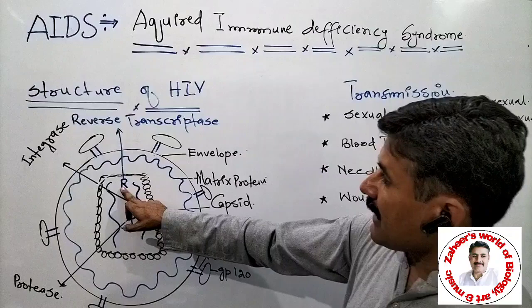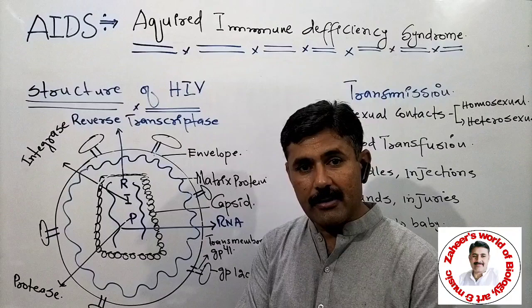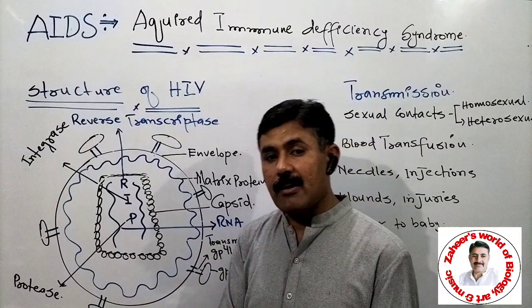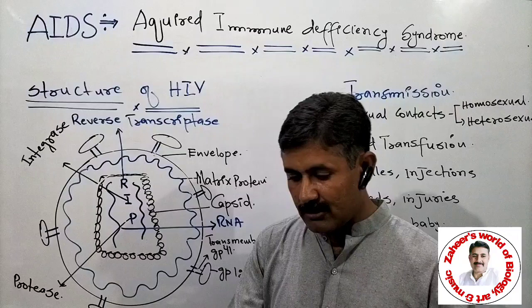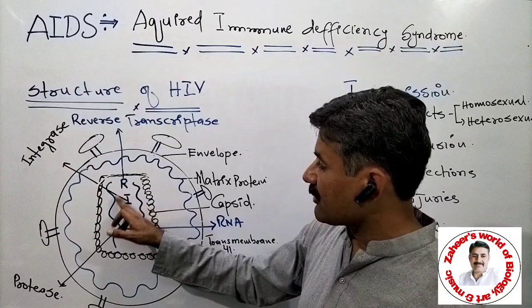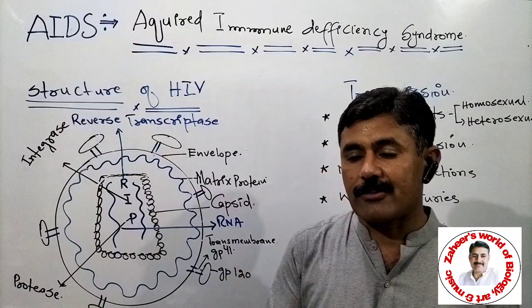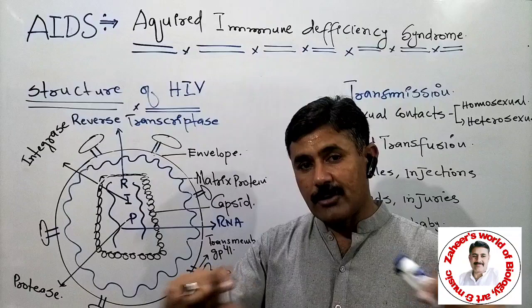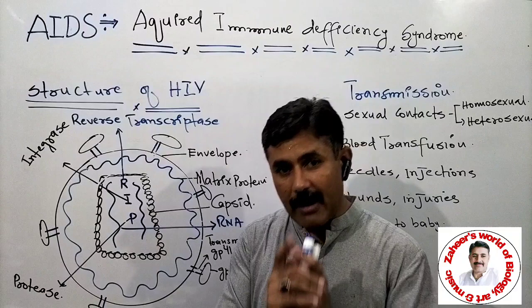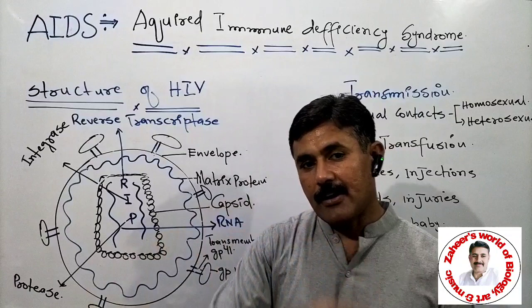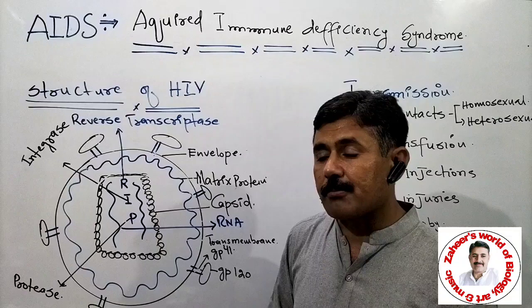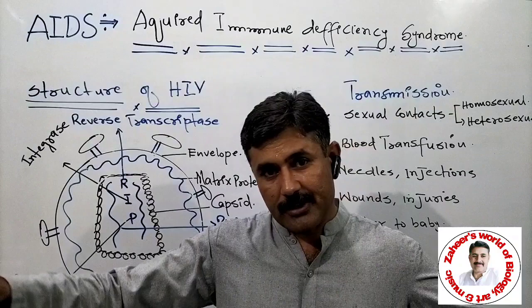The first enzyme is reverse transcriptase, which helps the virus convert its RNA into DNA. The second enzyme is integrase. When the viral RNA is converted to DNA, the viral DNA genome gets incorporated and integrated with the host cell's DNA, with the help of integrase. This enzyme helps the provirus get integrated with the genome of the TH cell.